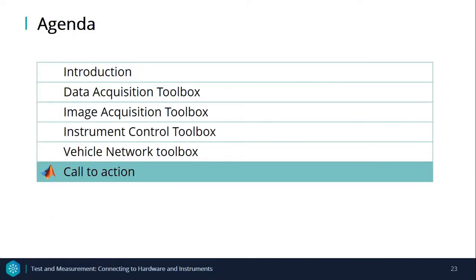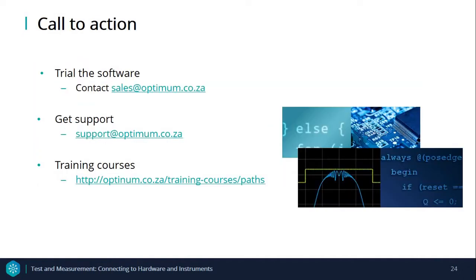That brings us to the end of the webinar. If you wish to try out the software, you can contact one of the business development consultants or sales reps by emailing sales at optinum.co.za. If you are already using the tools or have any technical questions, you can email our support queue at support at optinum.co.za. If you would like to attend a training course to build your proficiency with MATLAB and Simulink, you can visit our website and navigate to the training course page. I hope you found the webinar useful — please leave all your comments and questions below. Thank you for watching.